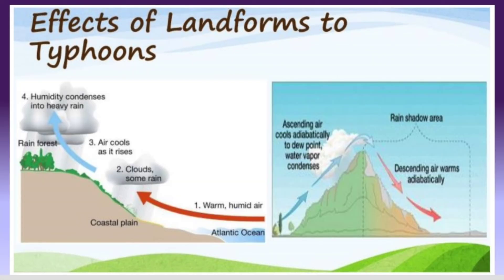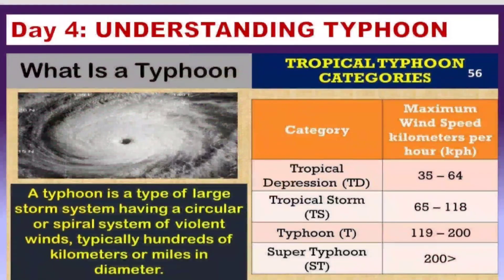When a typhoon reaches a land mass, wind is blocked by mountains and man-made structures, causing it to decrease in speed. Additionally, there is no large supply of warm water over land, which causes the typhoon to weaken during landfall. The key point to remember: a typhoon gets stronger over the ocean due to accumulation of water and energy, but once it hits land — landfall — it gets weaker and its speed decreases.